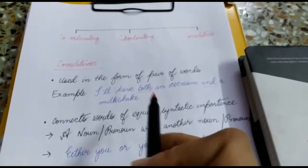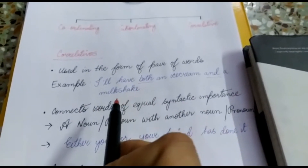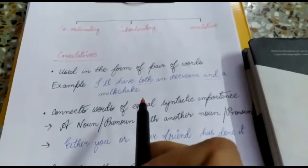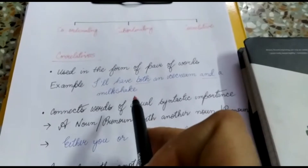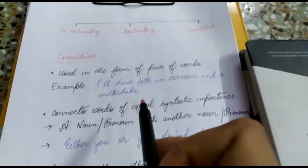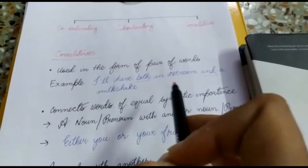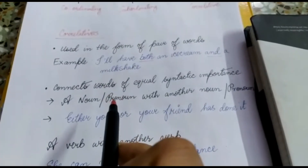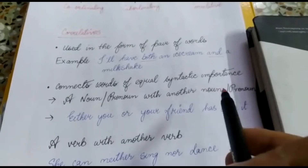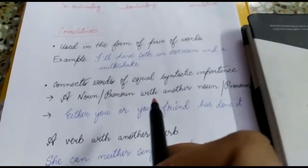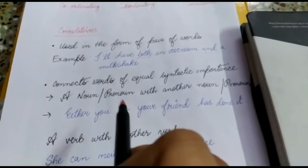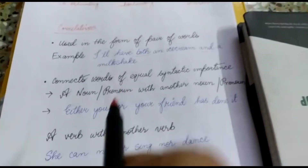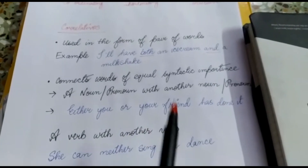Correlative conjunctions form a pair. For example, 'I'll have both an ice cream and a milkshake' — here the correlative conjunction pair 'both...and' is used together in this sentence to make complete sense. Correlative conjunctions connect words of equal syntactic importance. So a correlative conjunction pair joins a noun with another noun, or a pronoun with another pronoun, or a verb with another verb.